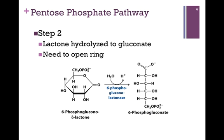In our second step, we need to open that ring to form the linear structure. However, since we've oxidized the ring and oxidized specifically the anomeric carbon, the ring cannot open on its own, and so we need the lactanase here to act as a hydrolase to open the ring and to form 6-phosphogluconate.